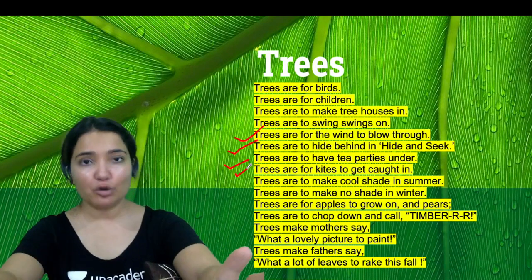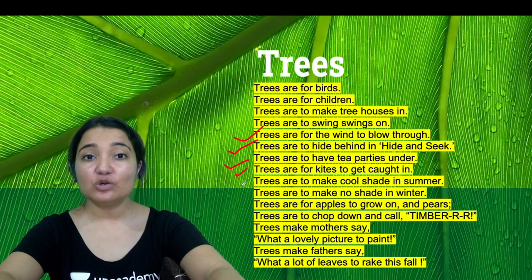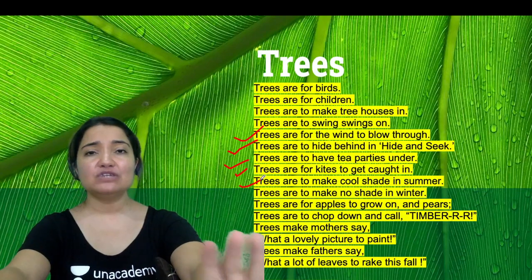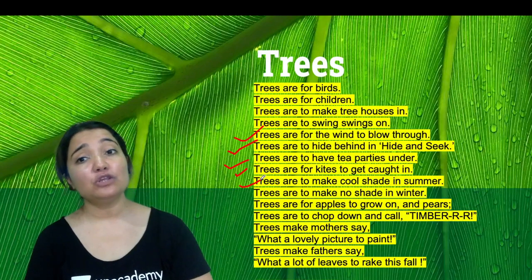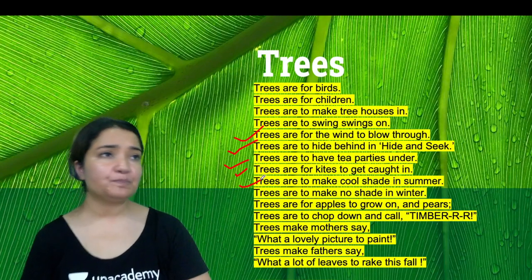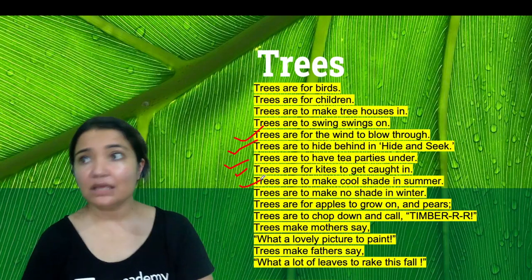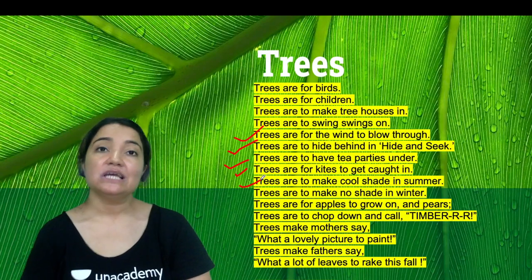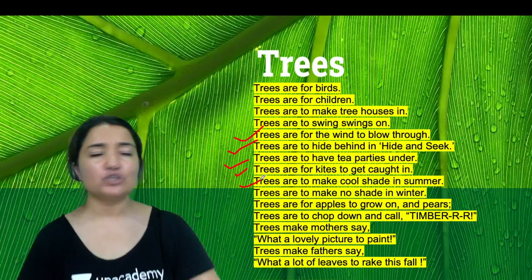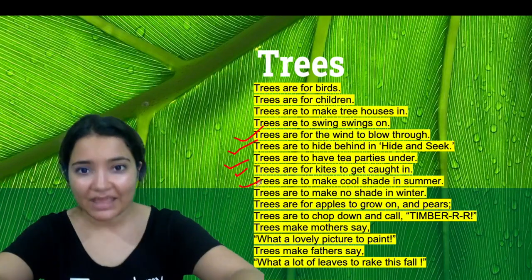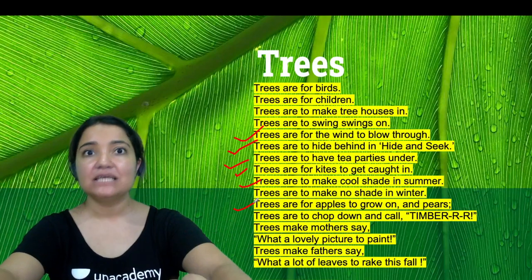When we ride kites, there are trees for it. Trees are to make cool shade in summer — how much fun to sit under the trees! Trees are to make no shade in winter; in winter we don't feel good in the shade, but you still need trees. Trees regulate your temperature — if there are no trees it is impossible to live. Whether it's summer or winter, trees are needed. Trees are also for apples and pears to grow on — apples and pears grow on trees.